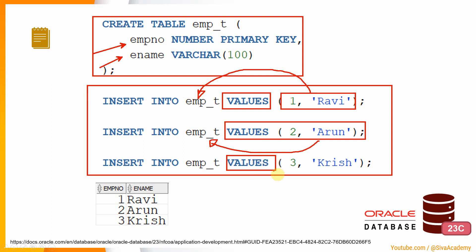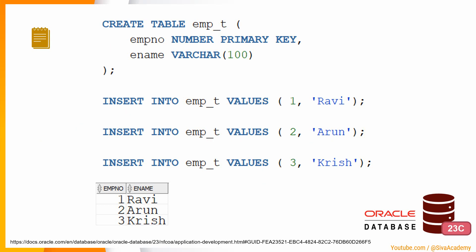Till the previous version, using this VALUES keyword or this VALUES clause, we are only able to populate one row of data. From 23c onwards, using the same VALUES clause, we can populate more than one row of data. That means rather than writing three insert statements like this, we can write a single insert statement with multiple values using this VALUES clause, and by that way, multiple rows can be populated.